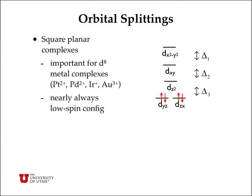Square planar complexes are important for d8 metal complexes like platinum-2, palladium-2, iridium-1, and gold-3 complexes, and they're almost always low spin configurations. The dx²-y² orbitals point directly to the ligands and have the highest energy. The dxyz and dzx orbitals have the lowest energy because those orbitals point more away from the ligands and between the axes. The dz² and dxy are somewhere in between.